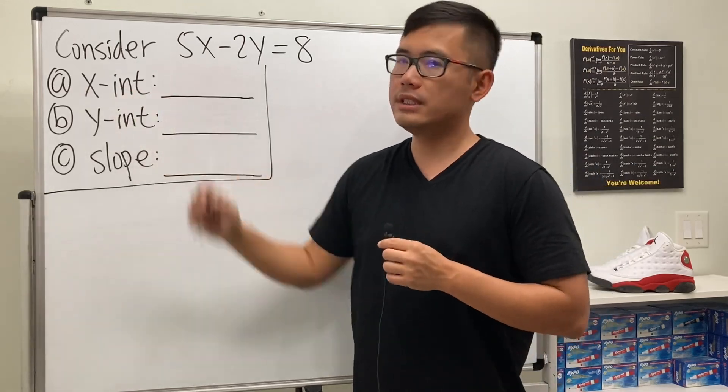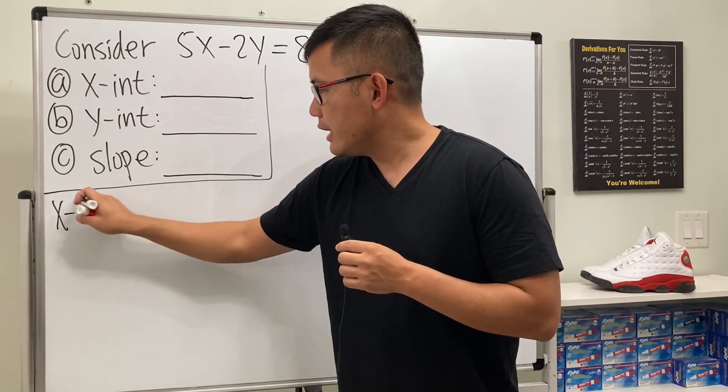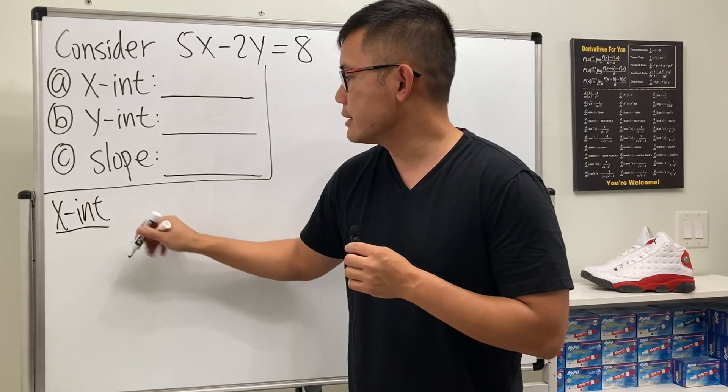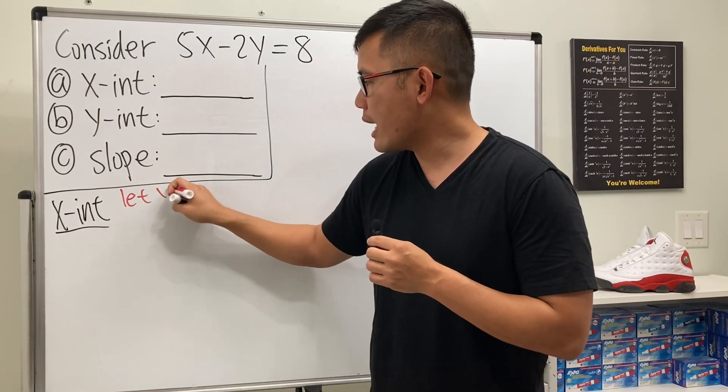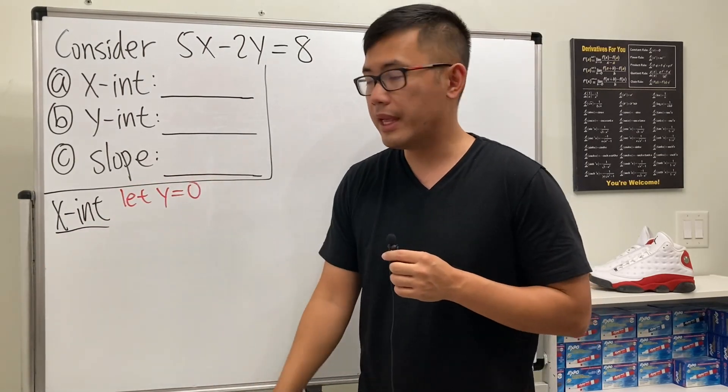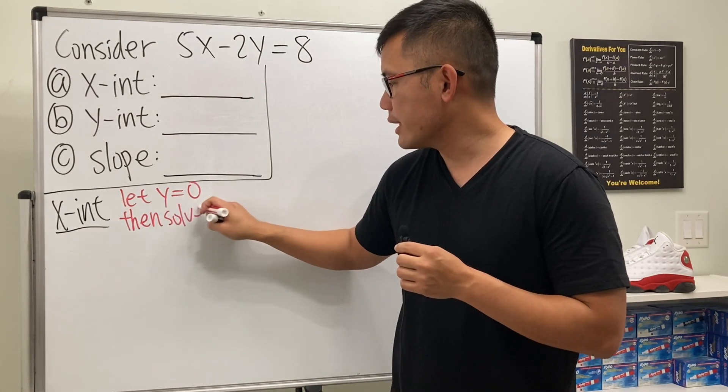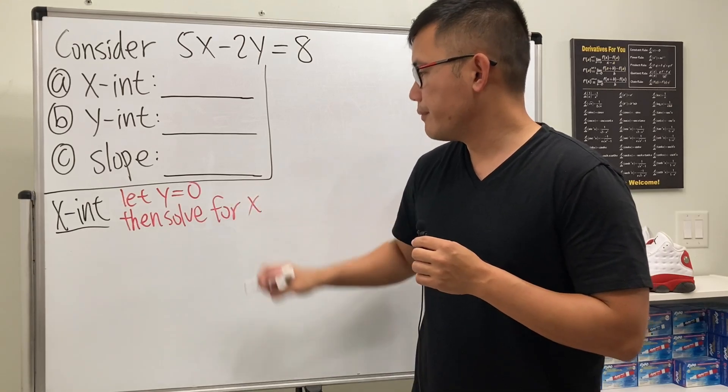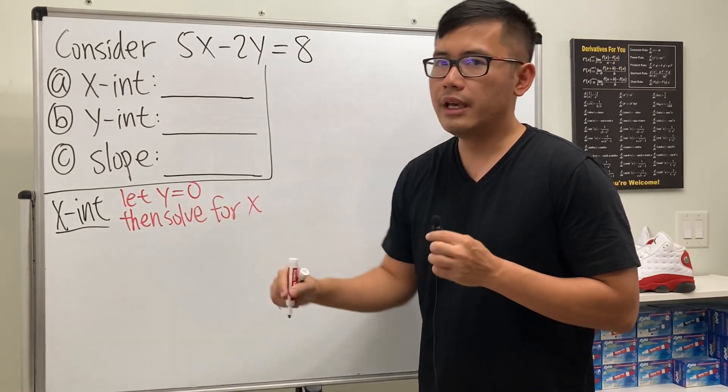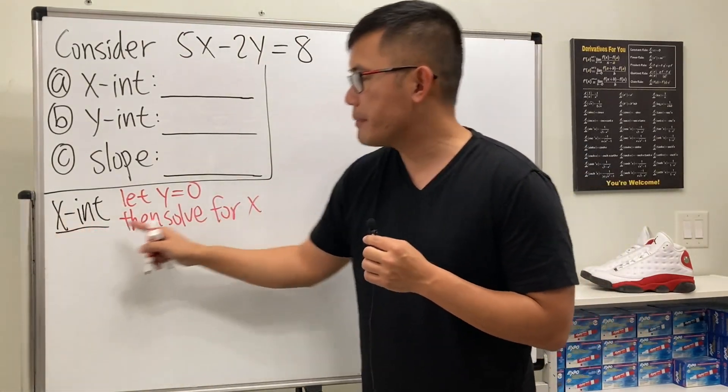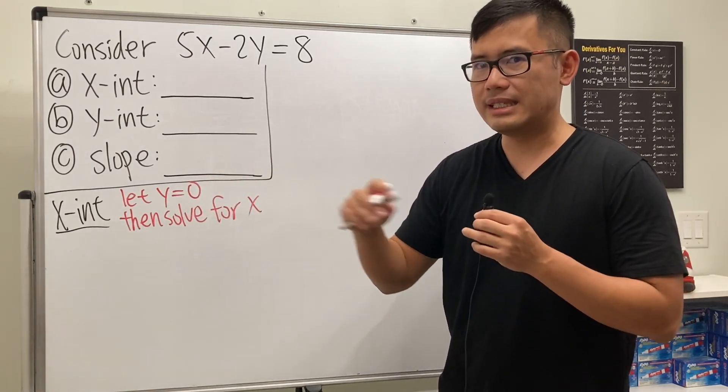Let's start with the x-intercept. For the x-intercept, we have to let y be zero, then solve for x. This is the key to remember: in this step, you let y equal zero because it's on the x-axis.